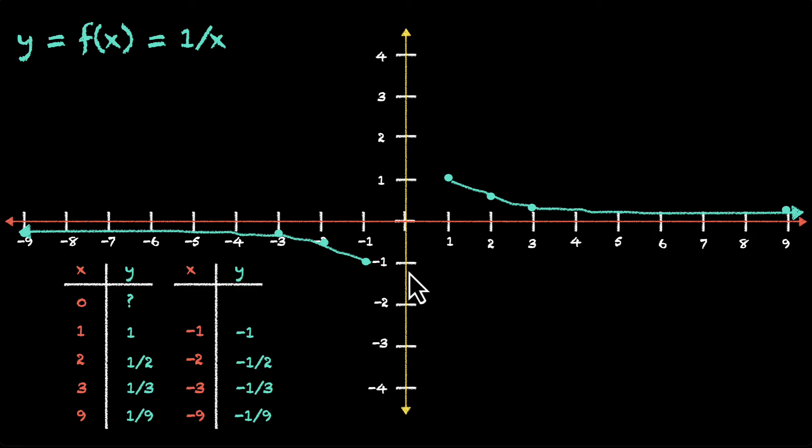Is this it? Is this the entire graph? Actually, no. We're missing some values. We have all the values for 1 and above. And we have all the values for minus 1 and below. But we don't have values from minus 1 to 1.